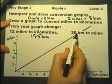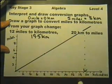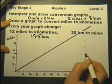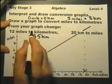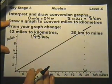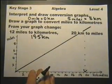Also kilometres to miles: for 20 kilometres, go up to 20 on that axis, go across, and read the miles off. So there's our conversion graph.